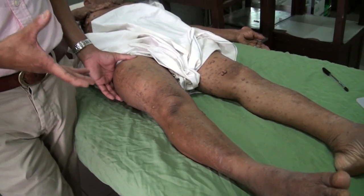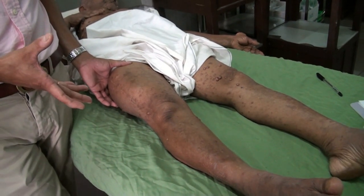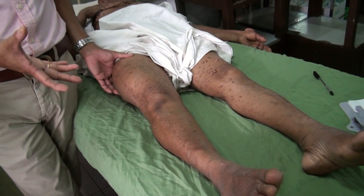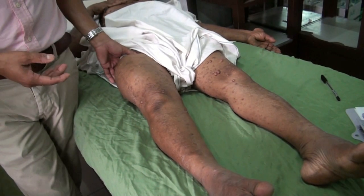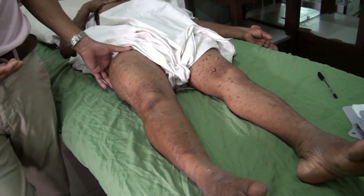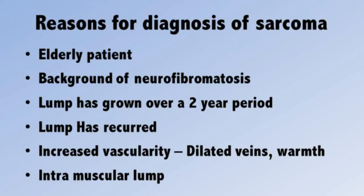Putting all findings together, this may be some sort of sarcoma — either sarcomatous change of one of the neuromas, or a sarcoma arising in the muscle. Clinically I cannot differentiate, but given that this is an elderly patient with neurofibromatosis, the neuromas can undergo sarcomatous change. The lump has grown rapidly over two years, has recurred, has dilated veins suggesting increased blood supply, is warm, and is within the quadriceps group. All these features favor a sarcoma, possibly neurosarcomatous change of a neurofibroma or sarcomatous change arising in the muscles.